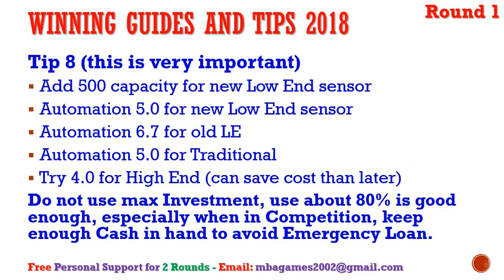Tip number eight: add capacity for the new product. When adding a new product, also add new capacity so when the product is ready after R&D development, you have capacity to produce. Automation for the new product should be about 5; for the old low-end product, about 6.5–6.7. For others, increase automation by 1 point. Leave high-end, performance, and size to increase automation in rounds two, three, and four when you have a higher investment budget.